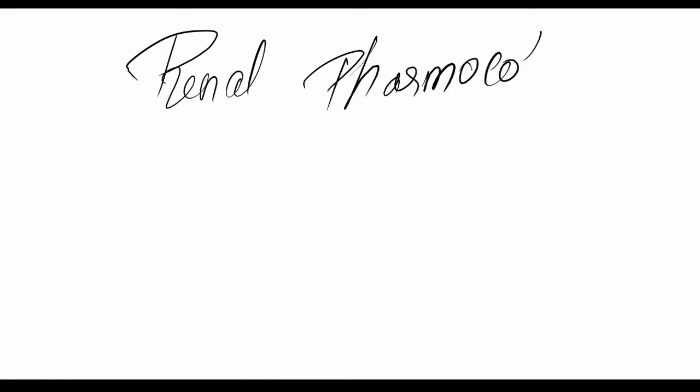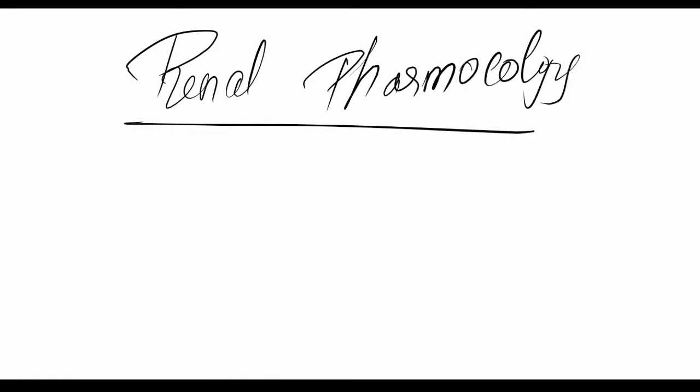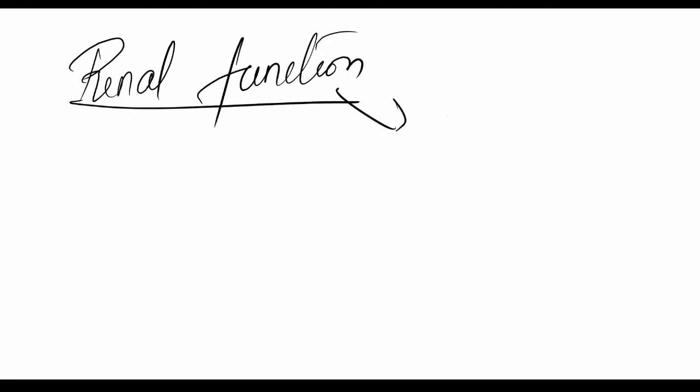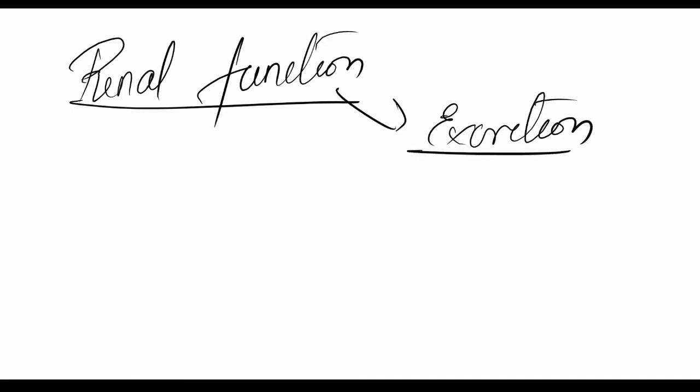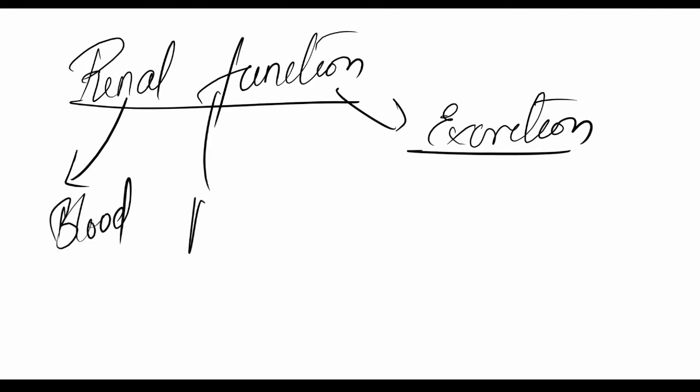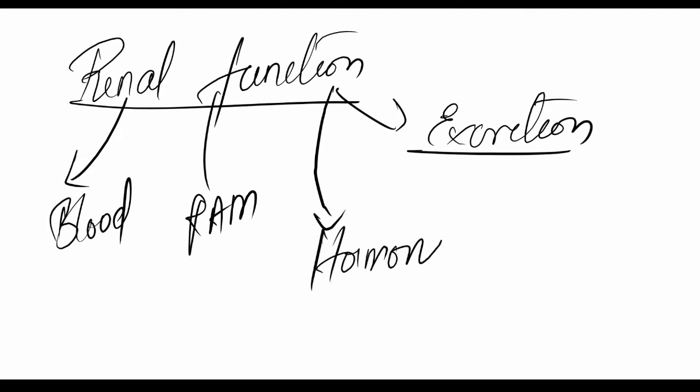Welcome back. Today we are looking at renal pharmacology, the study of drugs that deal with the renal system. Before that, we have to look at the function of the renal system. The renal system has many functions, mainly dealing with excretion, so it is also called the excretory system of the body. To a lesser extent, it is involved with blood formation, the renin-angiotensin mechanism, and hormone production.